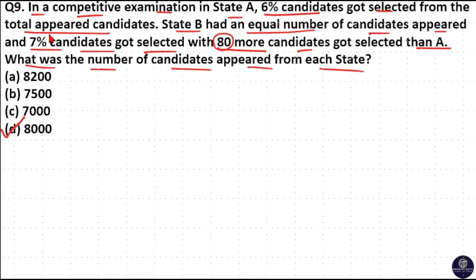That is here, total appeared candidates are same for State A and State B and selected candidates are 6% and 7%. But State B has 80 more candidates selected than A. That means 1% is 80 and 100% is 8000. State A has 6% of total candidates. Let us consider X as the total number of candidates. Then State A has 6% of total number of candidates got selected. And State B has 7% of total number of candidates got selected.